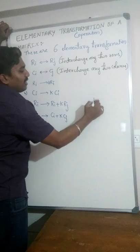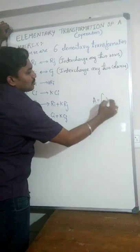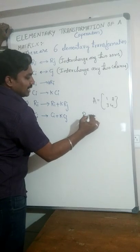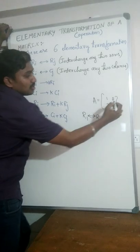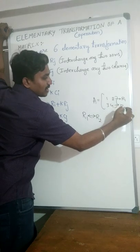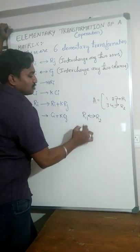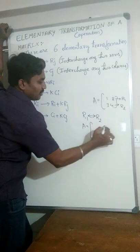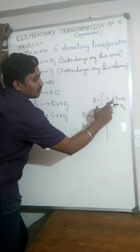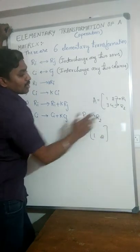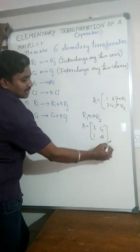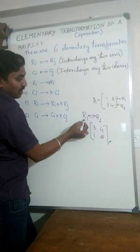For example, suppose I have a matrix like this: 1, 2, 3, 4. If I apply R1 interchanged by R2 — R1 is the first row and R2 is the second row — the resultant matrix replaces R1 elements with R2 elements and vice versa. R1 elements are 1, 2, so write them in row 2. R2 elements 3, 4 go into the first row. This is the resultant matrix for R1 interchanged R2.